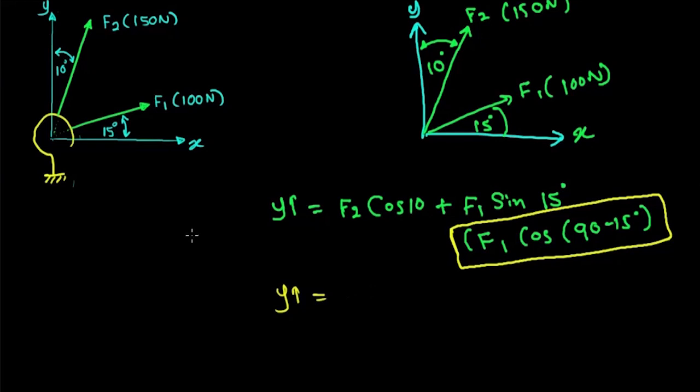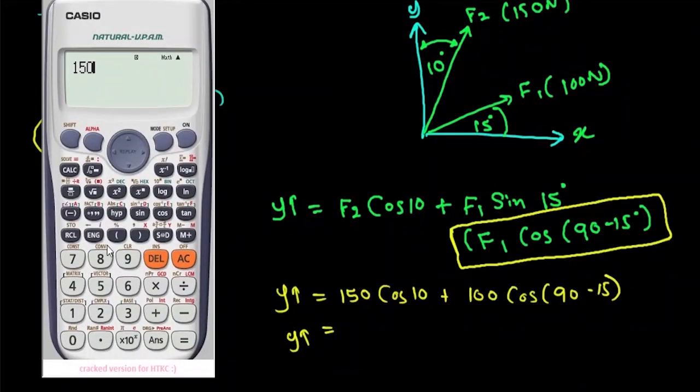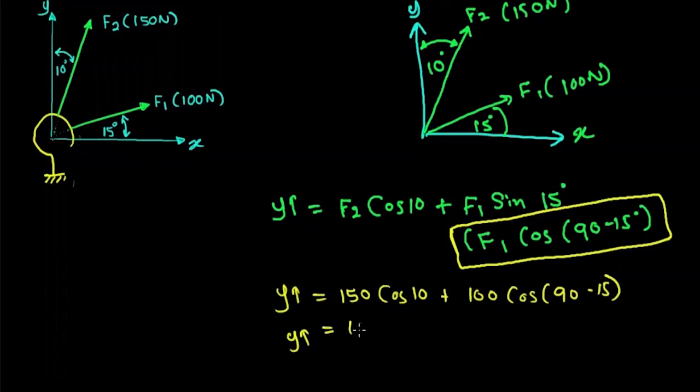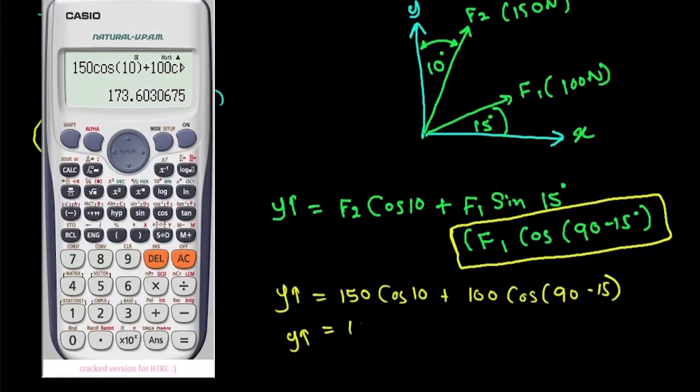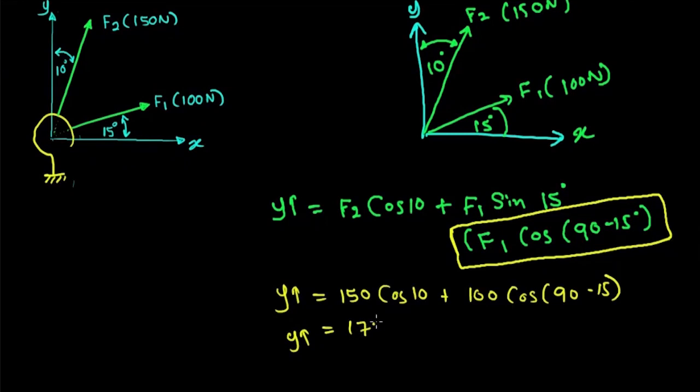Let me write F2 cos 10. F2 means 150 Newton times cos 10 plus 100 times cos (90 minus 15). Let's check the answer: 150 times cos 10 plus 100 times cos (90 minus 15), which equals 173.6 Newton.